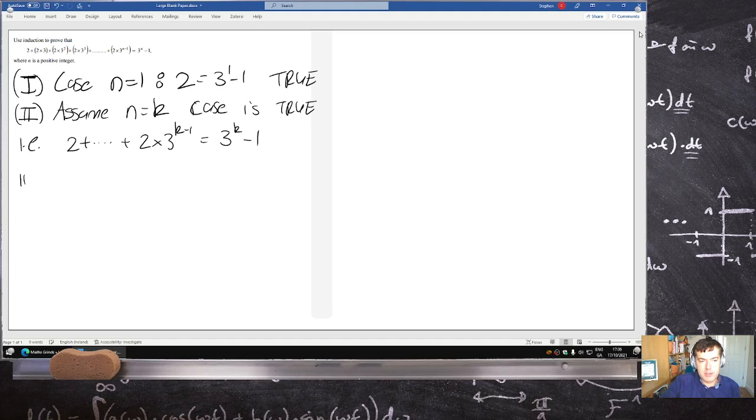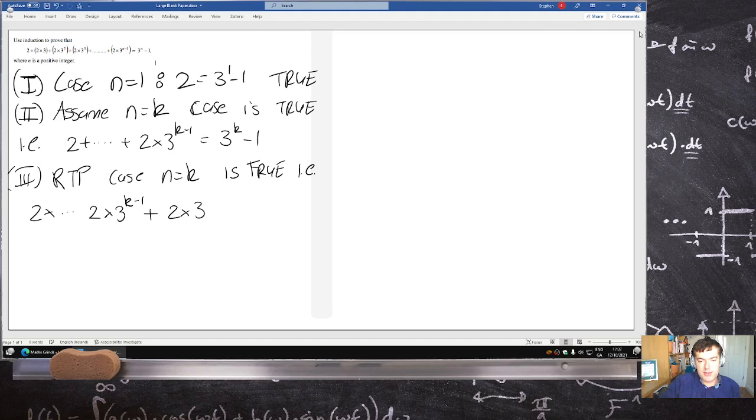We're required to prove case n equals k+1 is true, i.e., 2 plus all the way up to 2 times 3 to the k minus 1 plus 2 times 3 to the k...